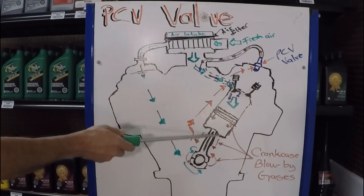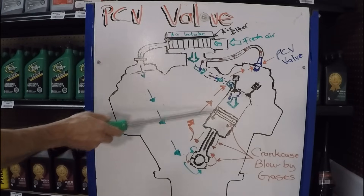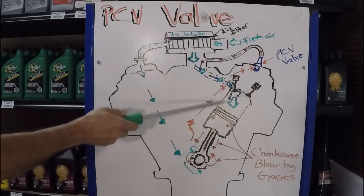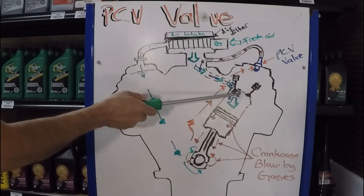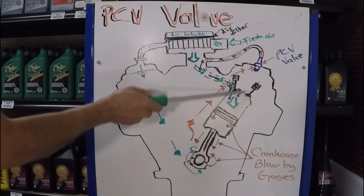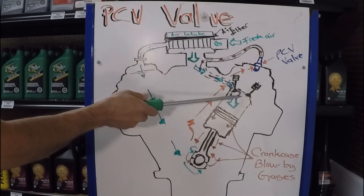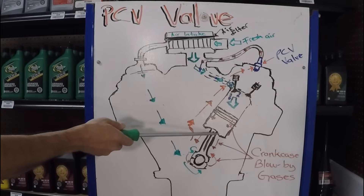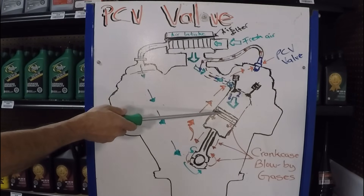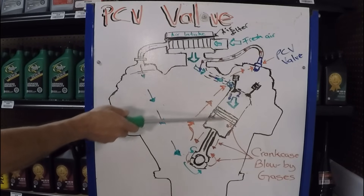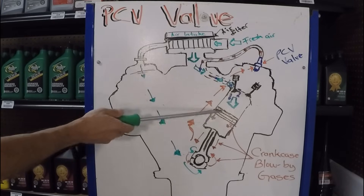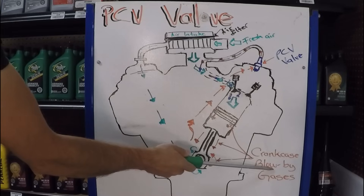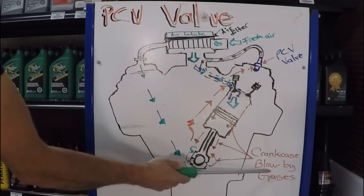During the intake stroke, which is when the piston is going down as the crankshaft rotates. Then during the compression stroke is when both valves are closed and the piston goes up. Once the piston is all the way up and all the mixture is compressed, the spark plug ignites the mixture and this creates the combustion stroke, which forces the piston down. During the combustion stroke, some of those gases or unburnt fuel will make it past the rings and past the cylinder into the crankcase. Those vapors that enter the crankcase are usually referred to as blow-by or blow-by gases.